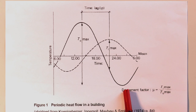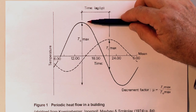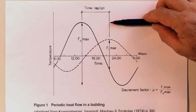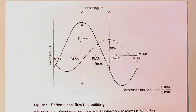Every wall configuration has a different decrement factor. It's never one, because if the decrement factor were one, then the outside air temperature would eventually be achieved internally — and we don't want that. We don't allow it to occur in our building design, and so that's why we use brick, gyprock, some form of insulation, and the air gap between the outside and inside skin of the wall.